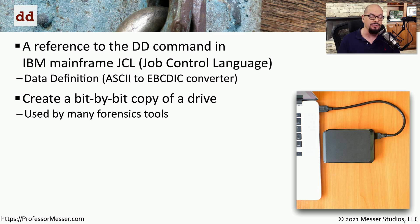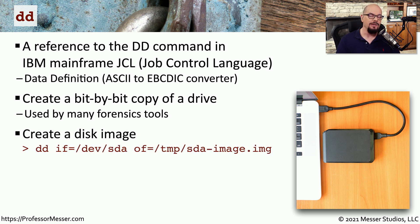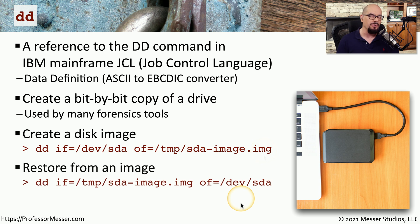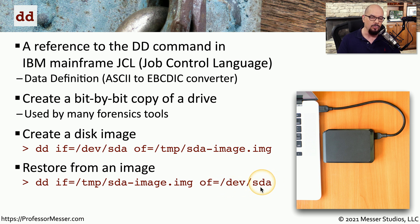This can obviously be very useful if you need to capture this information in order to perform additional analysis later. The command to create a disk image would be to use the dd command with the input associated with a particular drive or partition, and then the output would go to an image file that you would create. To restore from that image, you would simply reverse the process by specifying the image file as the input, and the output would be that drive or partition where you would like to store that information.